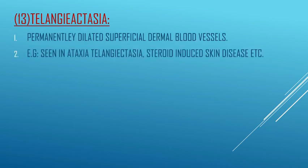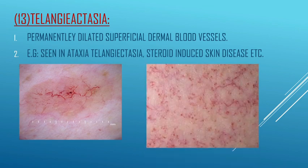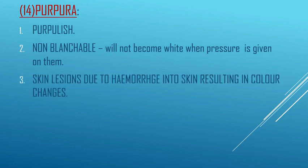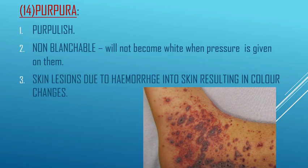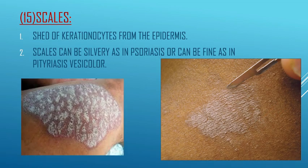Next is telangiectasia — permanently dilated superficial dermal blood vessels, seen in ataxia telangiectasia, steroid-induced skin diseases, etc. In these pictures you can see the superficial dermal blood vessels which are permanently dilated. Next is purpura — a purplish, non-blanchable lesion, meaning it will not turn white when pressure is applied. It is a skin lesion due to hemorrhage into the skin resulting in color changes.